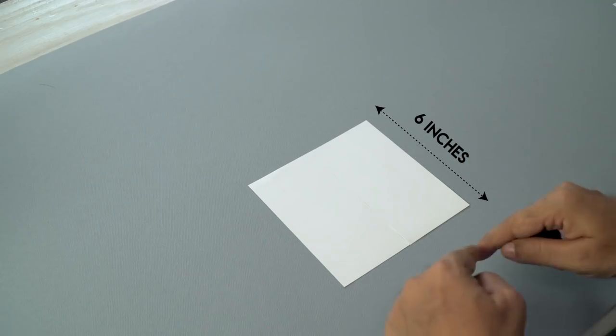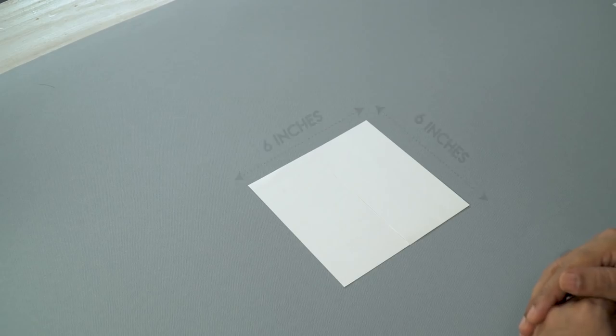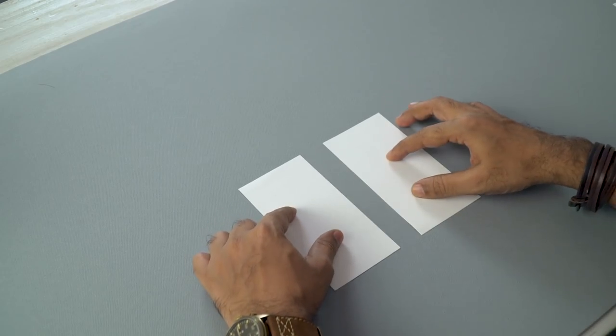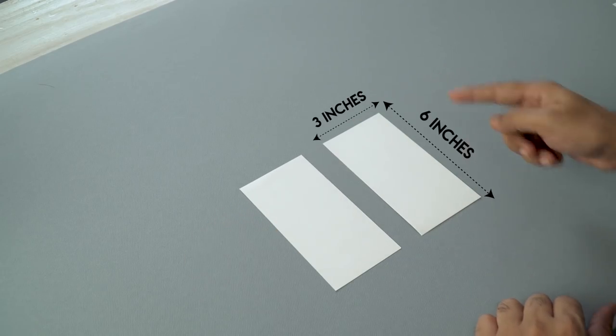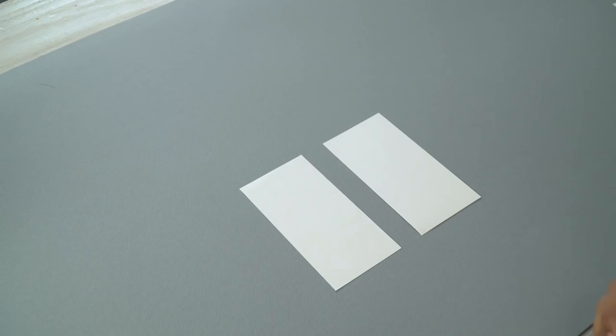Alright, let's get started. So first I am going to take this square sheet of paper which is 6 inches by 6 inches and I have divided this into two equal halves. So this is 3 inches by 6 inches. We need eight similar pieces.